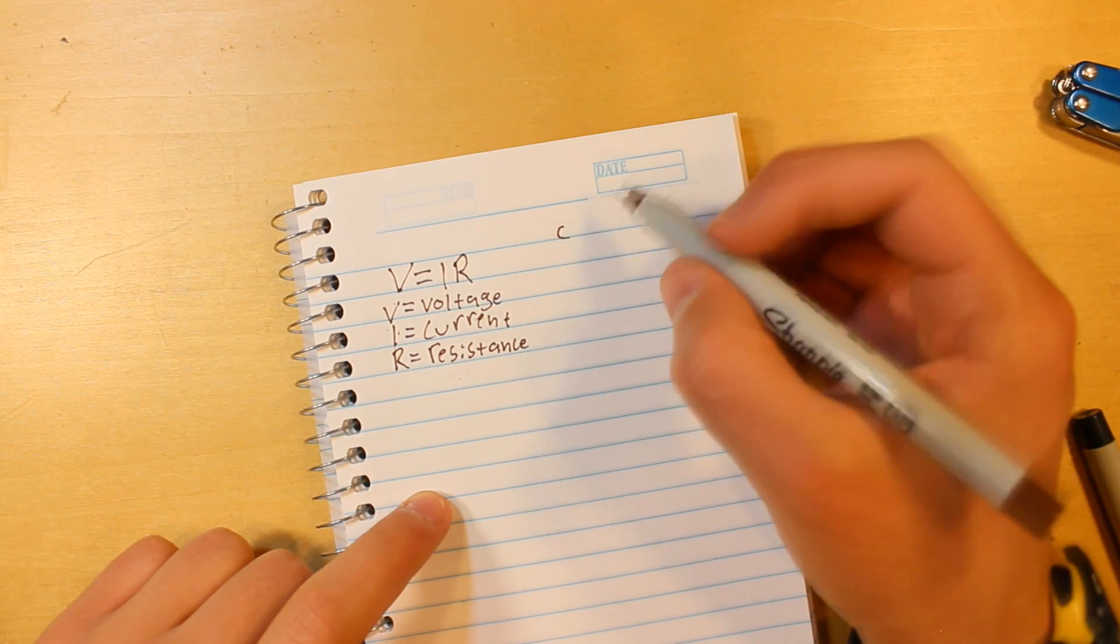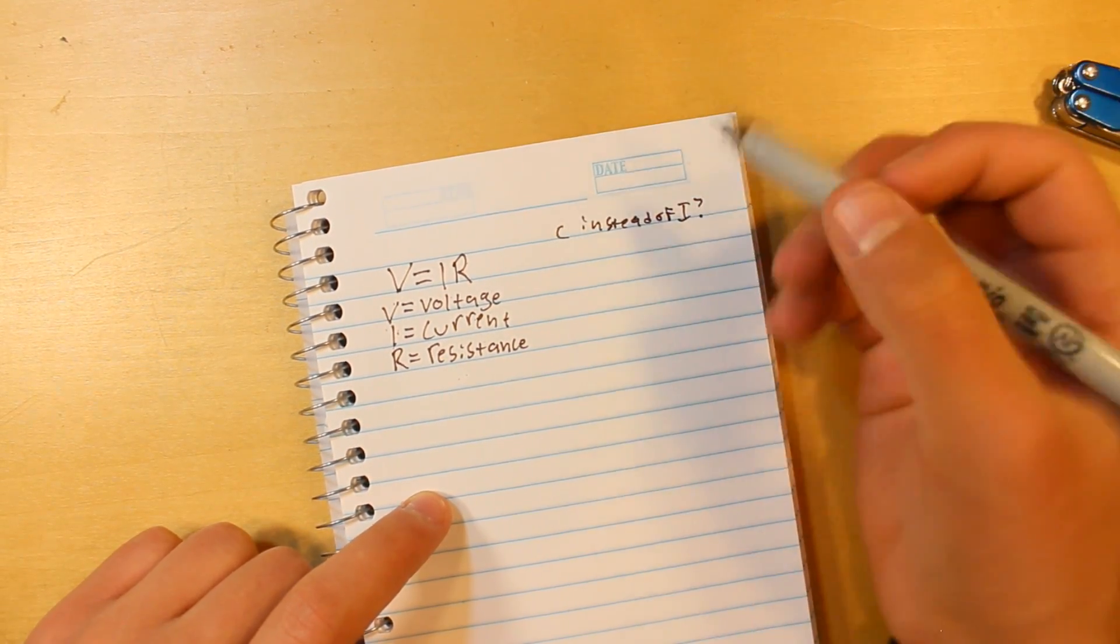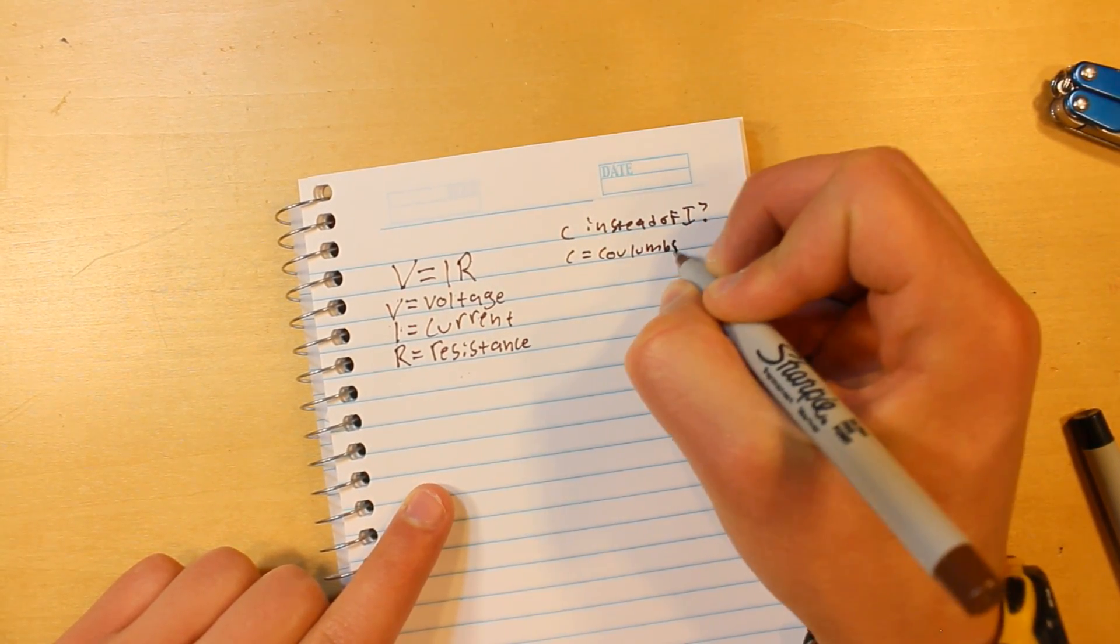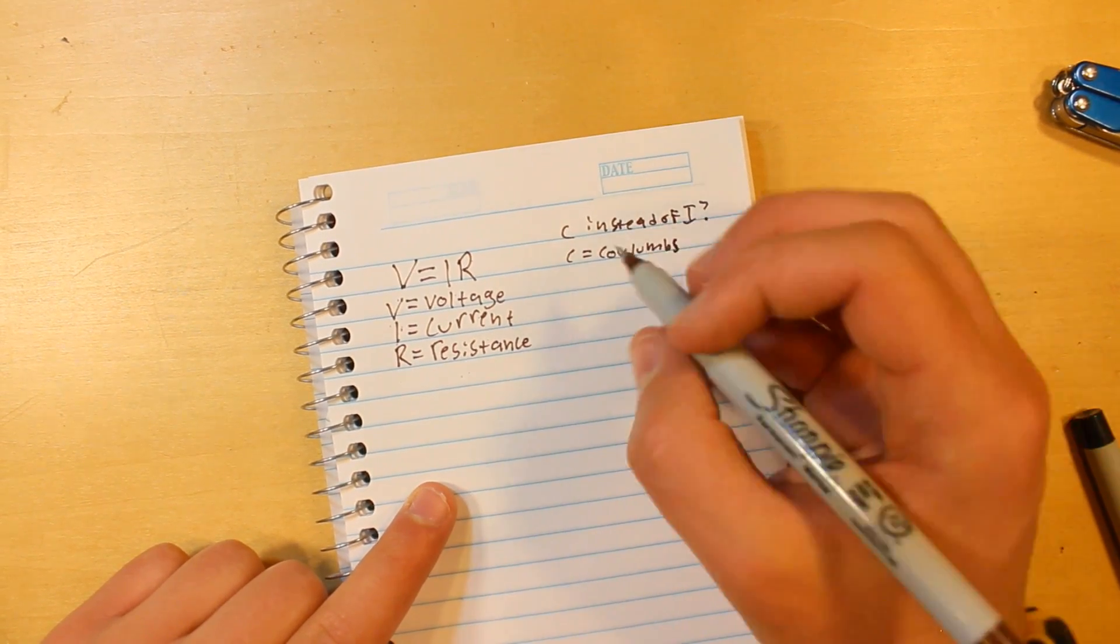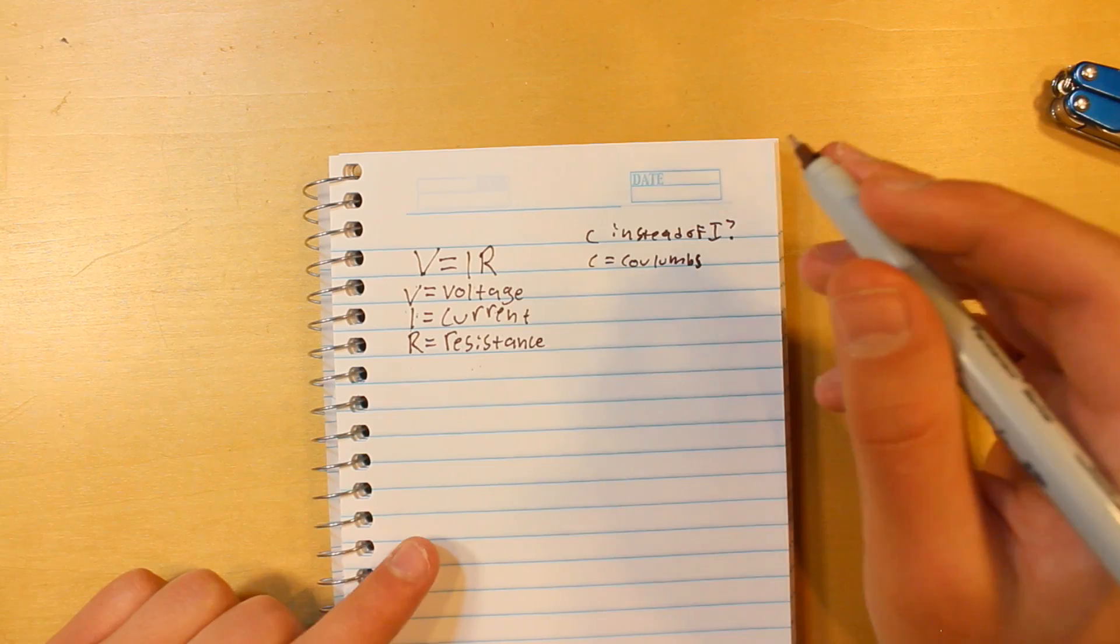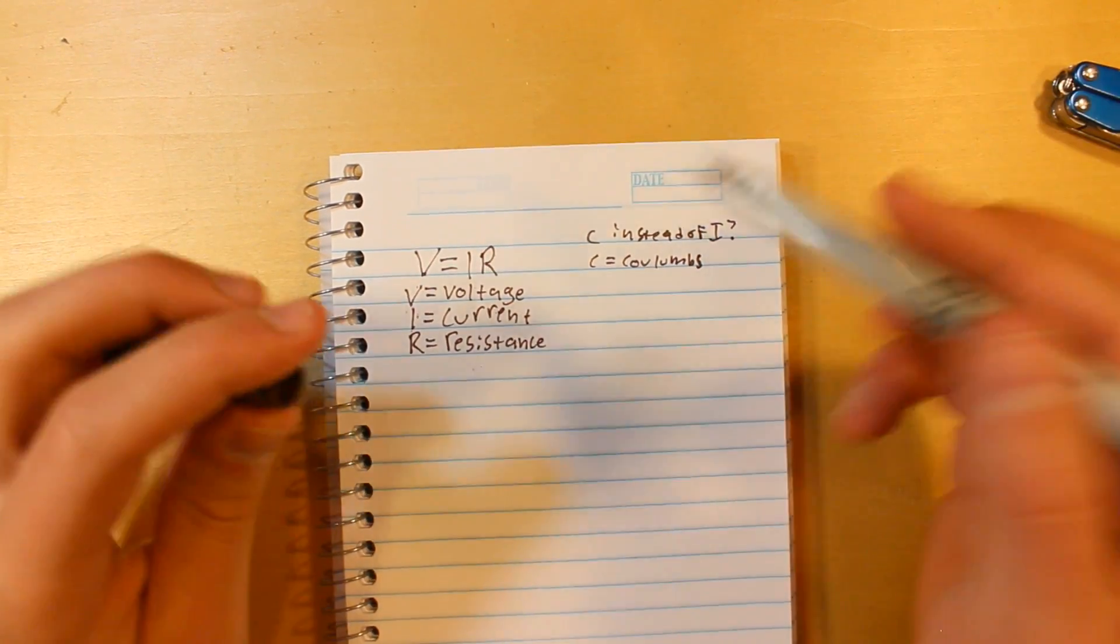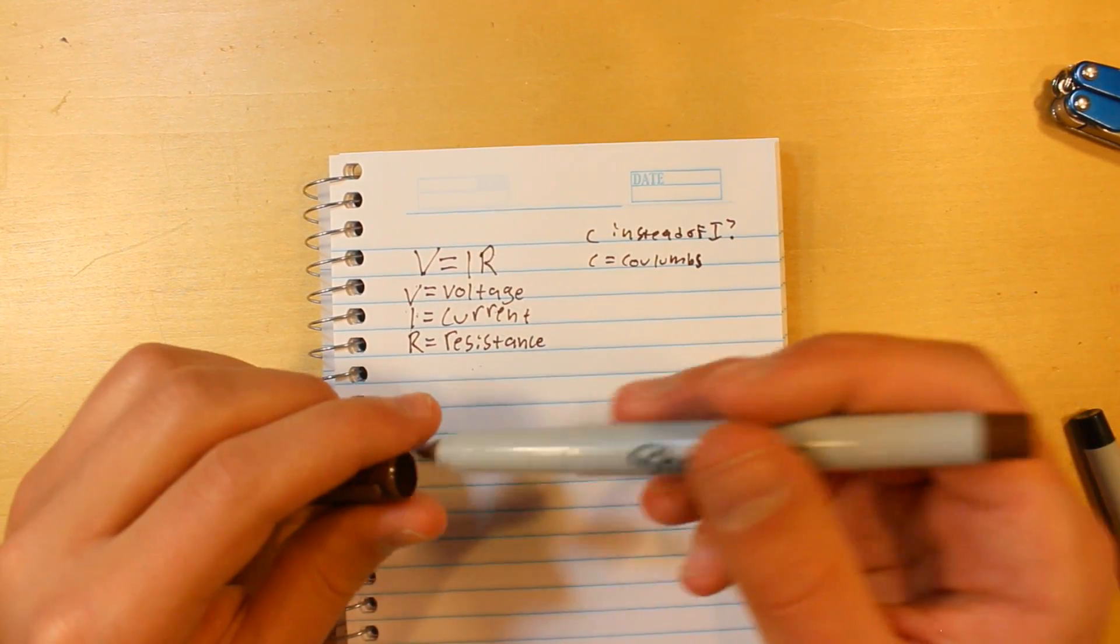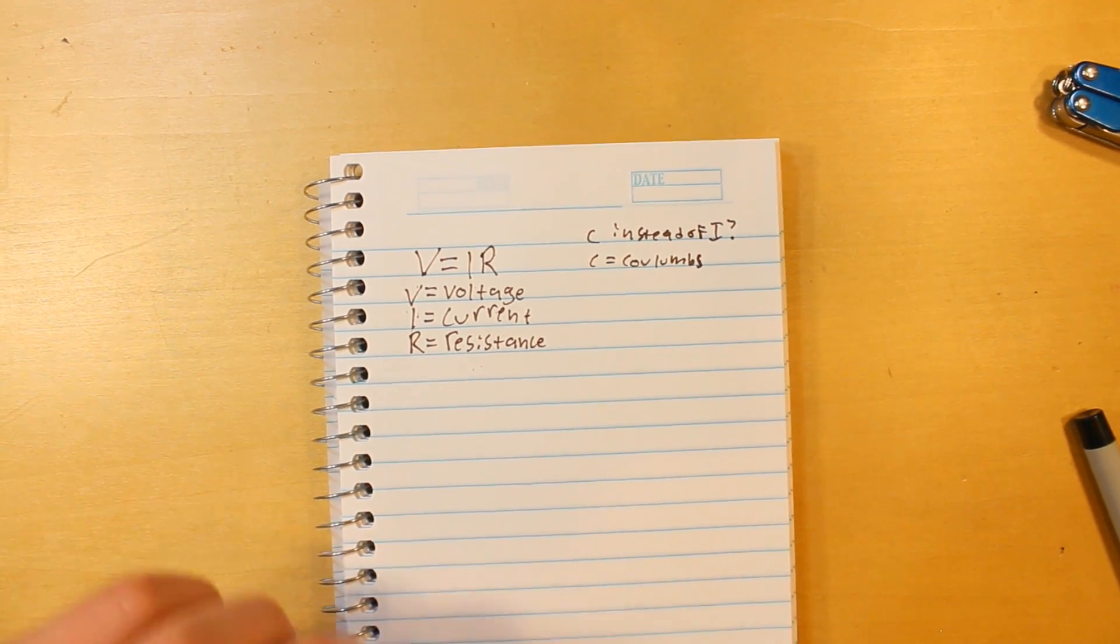Alright, why don't we use C for current instead of I? Well, that's because C stands for something called coulombs. Coulombs are actually a measure of electrons, but that's not really within the scope of this video. C and I are related though, but you don't want to get them mixed up because that would skew your results and not look very good.